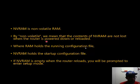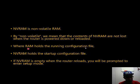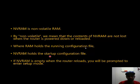The NVRAM holds the startup configuration file — it is how the Cisco router will start the next time you turn it on. If the NVRAM is empty, when the router reloads you will be prompted to enter the setup mode. It is where you go back to the ROM memory, and the ROM will allow you to start the router with a mini operational system.